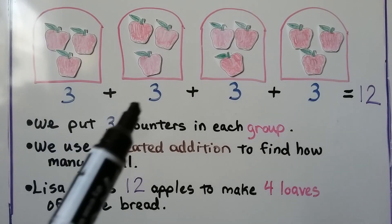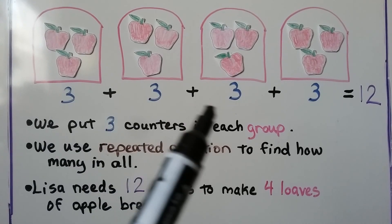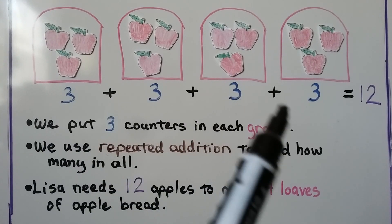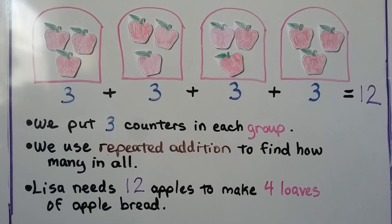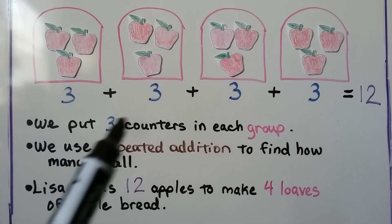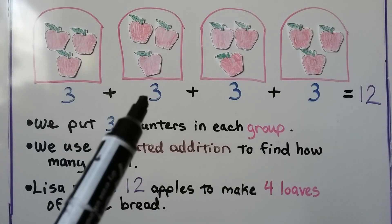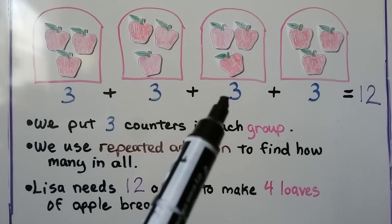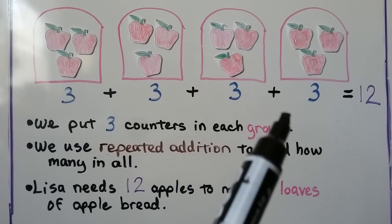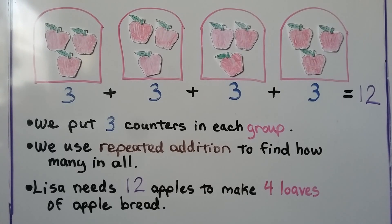Three plus three plus three plus three: three plus three is six, plus three more is nine, plus three more is twelve. Lisa needs twelve apples to make four loaves of apple bread.